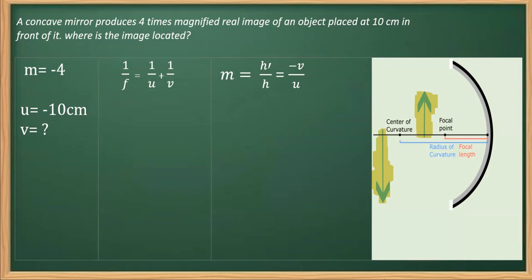Now we have to find v. As we can see here, we can use this magnification relation in order to find it. Why am I using this? As you can see, we have this m and we also know u, so by using this relation we can obtain the value of v.